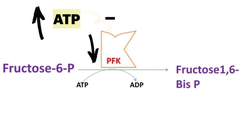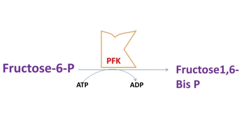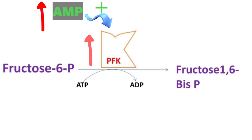Whenever AMP level is high, AMP binds to Phosphofructokinase at the allosteric site and increases its activity in such a way that the substrate can bind with the active site, which leads to an increased rate of glycolysis.